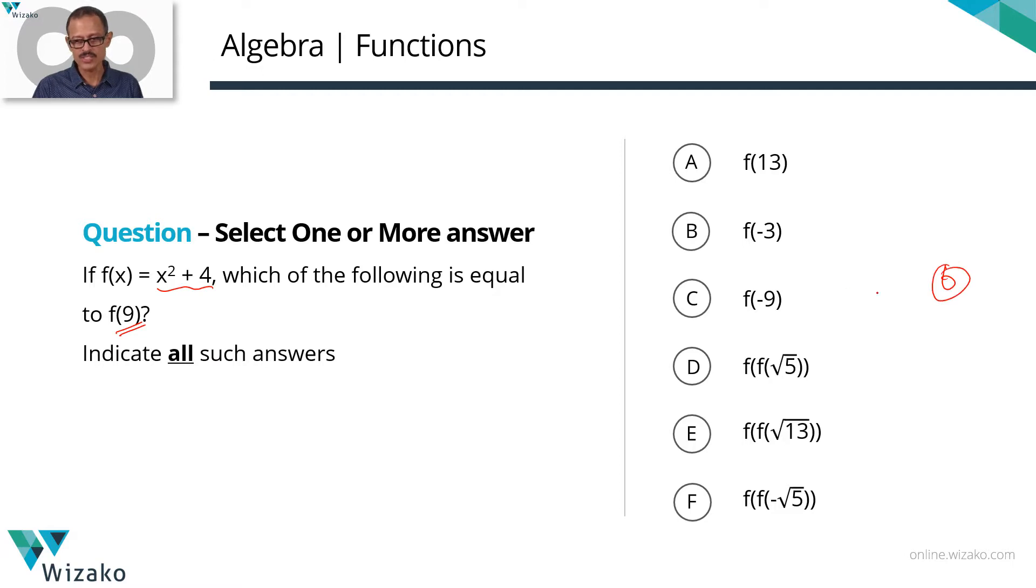We have six answer options. We need to check out which of these answer options will have the same value as f(9). So step one for us is computing the value of f(9). Once we know what f(9) is, then we can find out the values of each of these answer options and check out which one has the same answer as f(9).